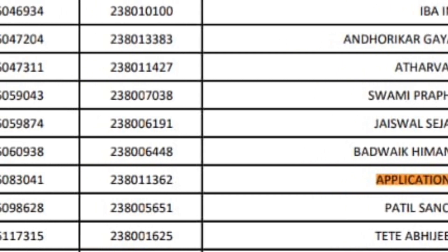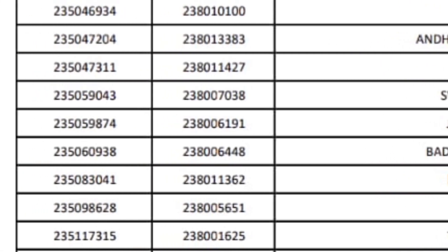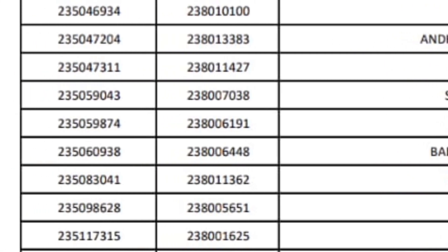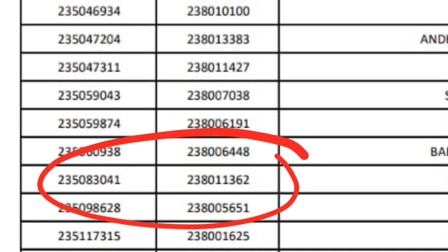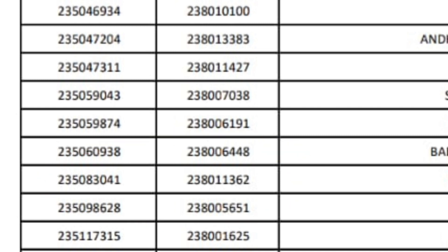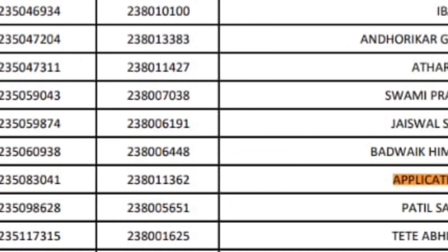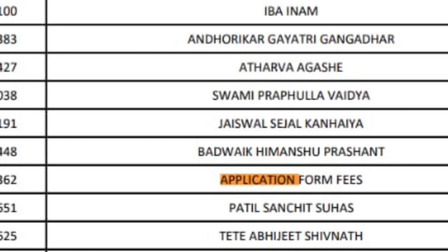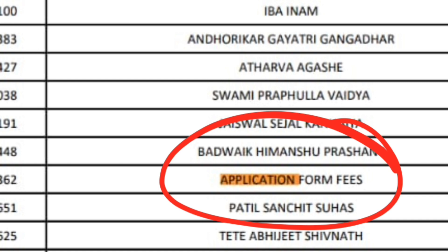It could be a student error, but when there is verification - when they check the name - the child should have seen it. The whole roll number is given here. The name field shows 'application form fees' so all the names can end up being just that placeholder name.